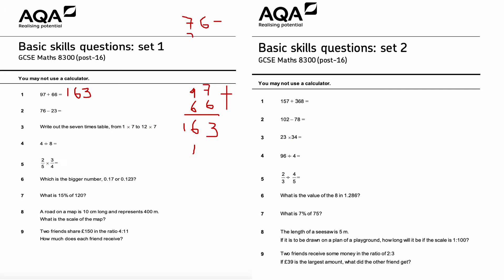Question number two: 76 take away 23. Again, column subtraction, putting everything under the same place value. 6 take away 3 is 3, 7 take away 2 is 5. So the answer is 53.